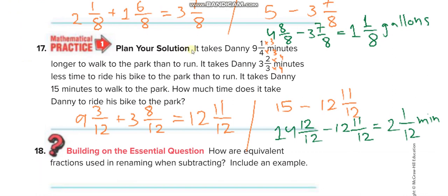The next question: it takes Danny 9 and 1 over 4 minutes longer to walk to the park than to run, and 3 and 2 over 3 minutes less to ride his bike. Add those two values together — the result is 12 and 11 over 12 — then subtract from the total time of 15. Rename 15 according to the denominator as 14 and 12 over 12, then subtract.